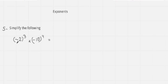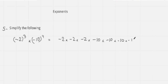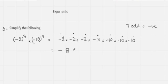Now I am taking another question: minus 2 power 3 multiplied with minus 10 power 4. Minus 2 power 3 means minus 2 is multiplied 3 times, and minus 10 power 4 means it is multiplied 4 times. Now let us count how many times we have the minus sign: we can see that we have minus sign 1, 2, 3, 4, 5, 6, 7. Seven is an odd number, so the answer will be negative. Now 2 times 2 is 4, 4 times 2 is 8. And 10 multiplied 4 times is 10,000. So the answer is minus 80,000.